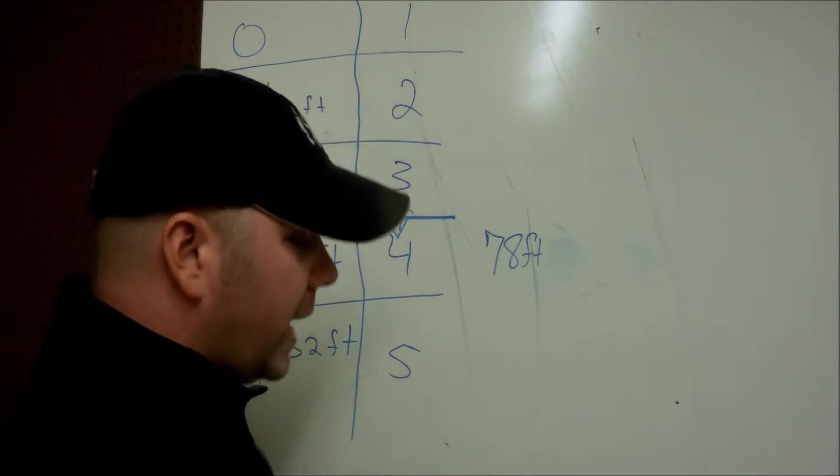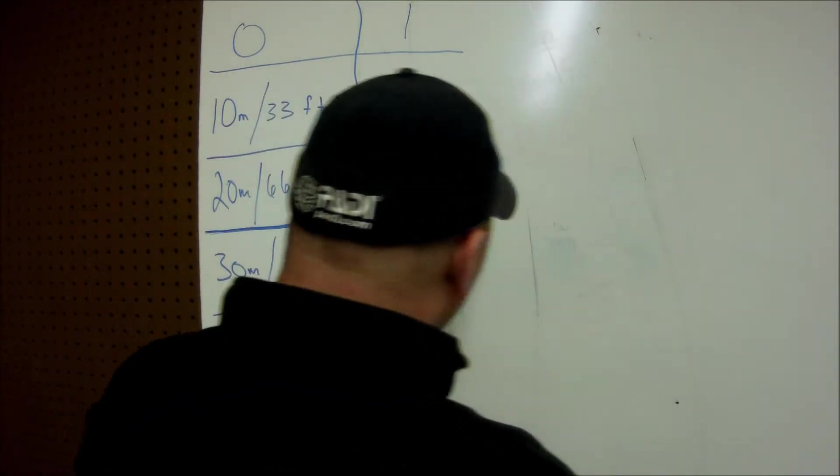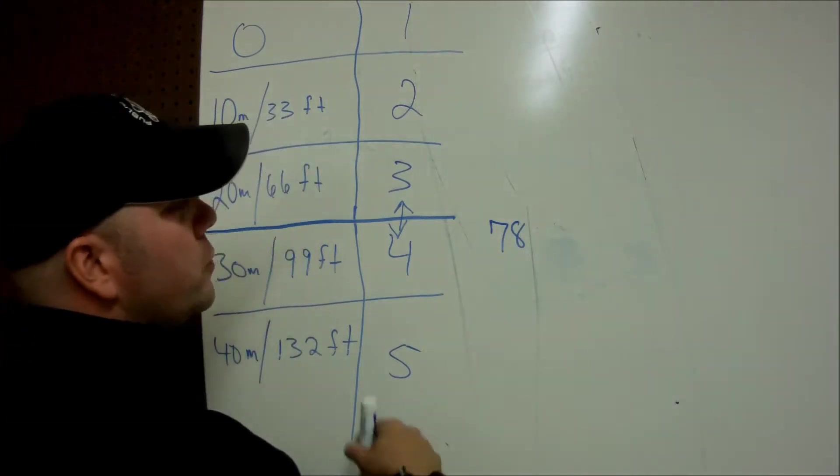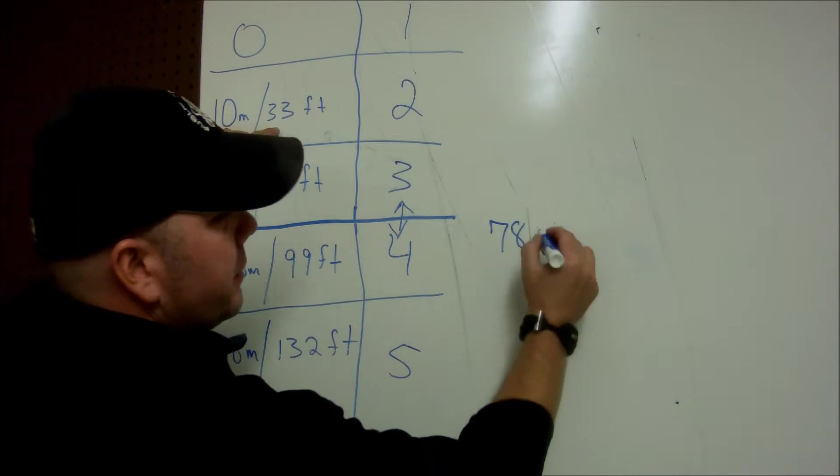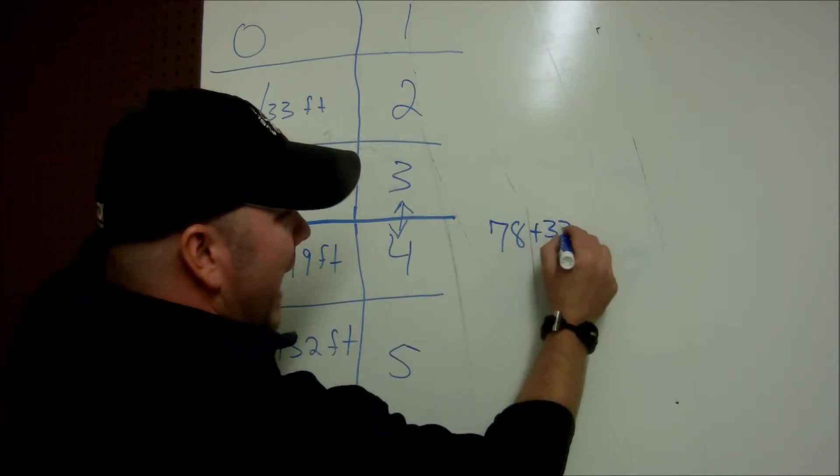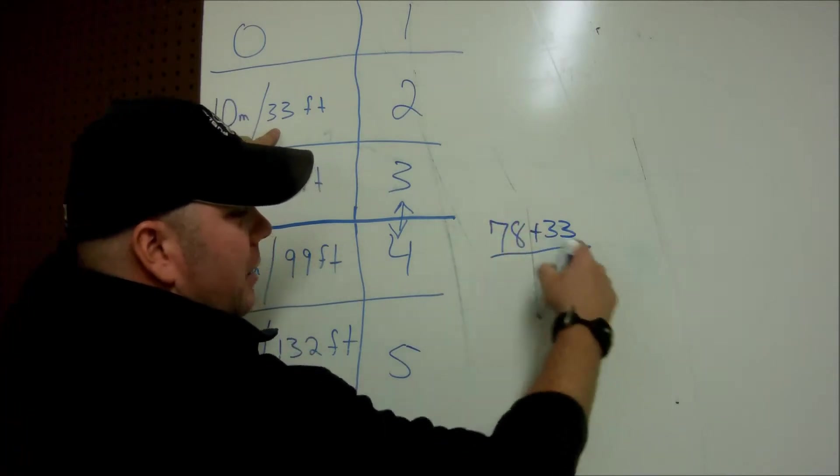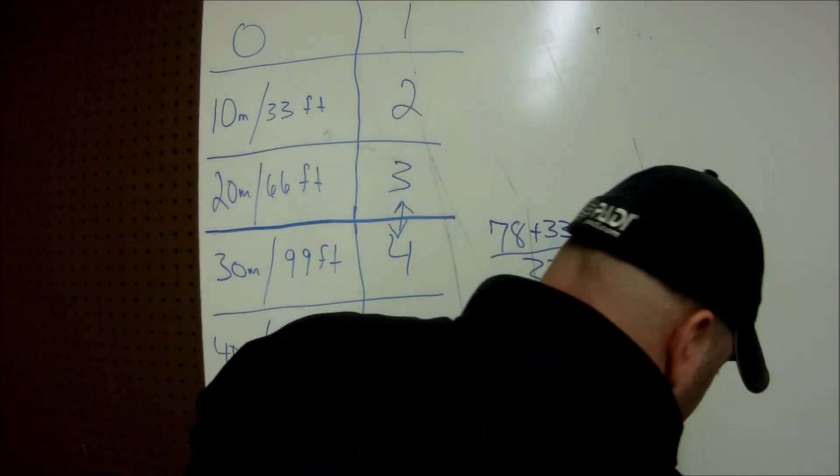So one way to figure out absolute atmospheres is a simple equation. I'm going to take 78 feet. I'm going to add what an atmosphere is. So one atmosphere is going to be 33 feet. So I'm going to add that together. Then I will divide the entire calculation by the same atmosphere.